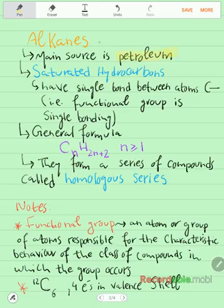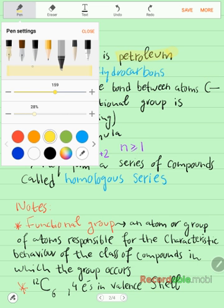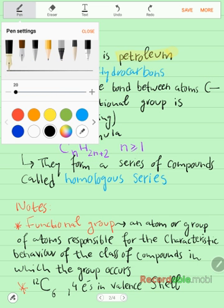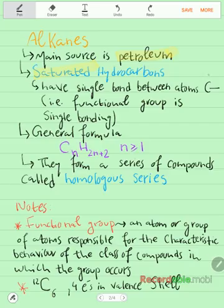Alkanes are described or classified as saturated hydrocarbons. What does that mean? Saturated means they have single bonds between the atoms. So the carbon has all single bonds, there won't be any kind of double bond or anything like that. No, it will all be single.